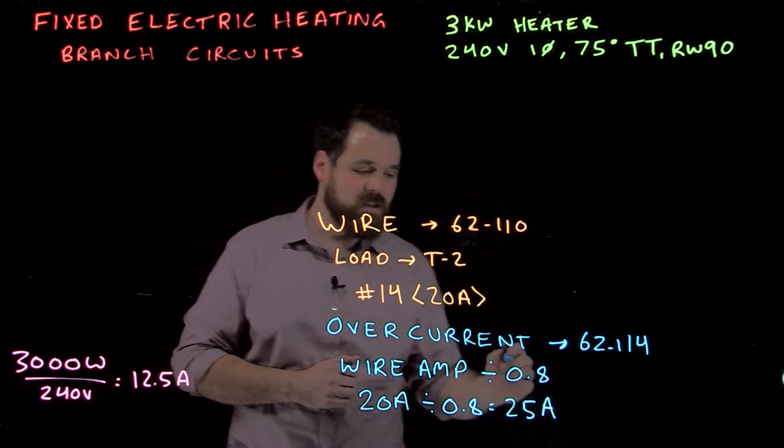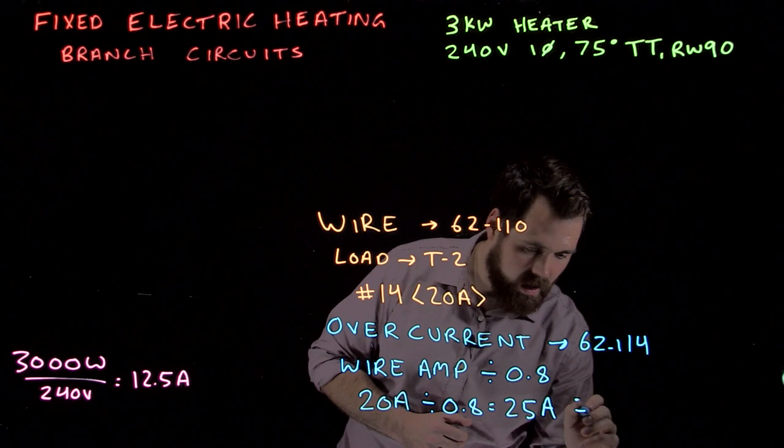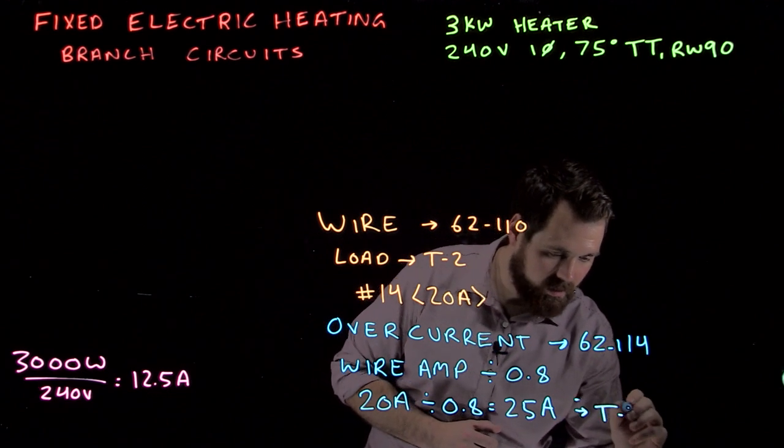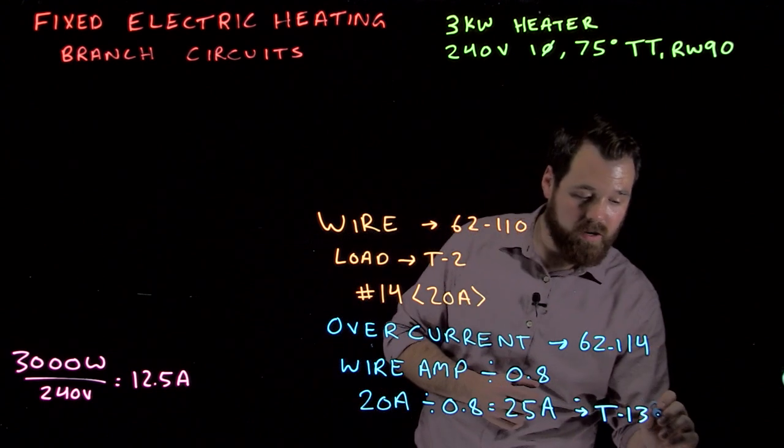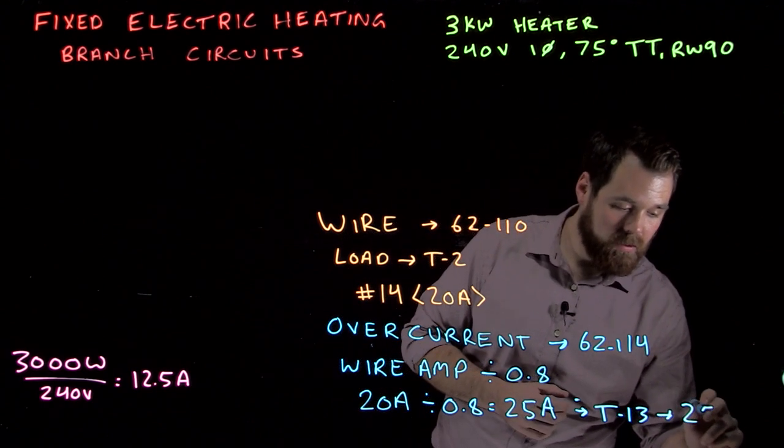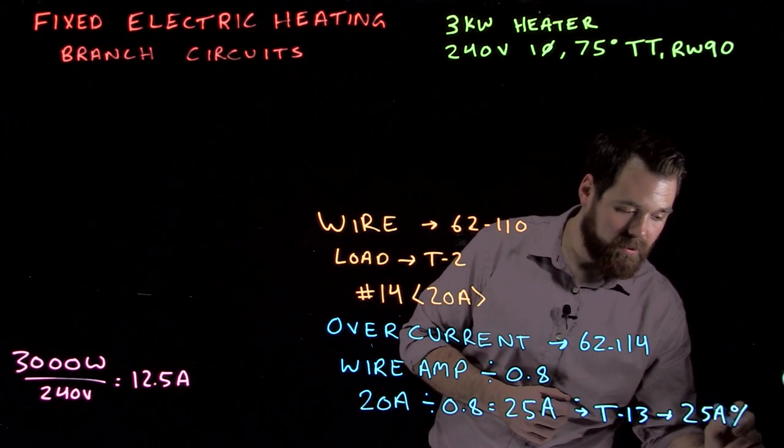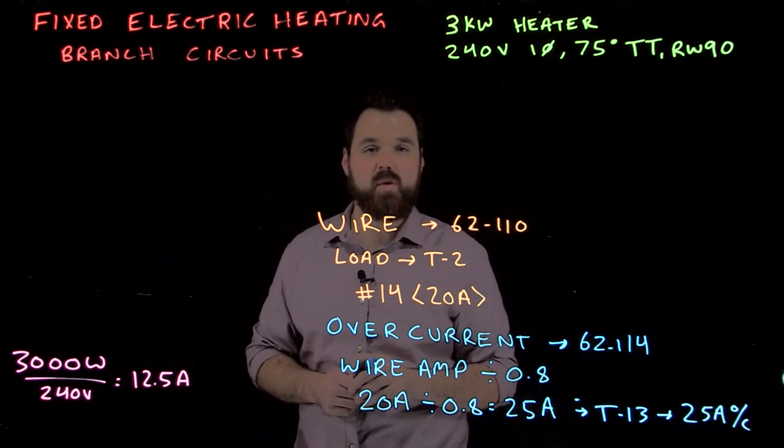We are going to take this number and we take that number to table 13. Luckily for us, there is a 25 amp breaker available on table 13, so we get a 25 amp overcurrent.